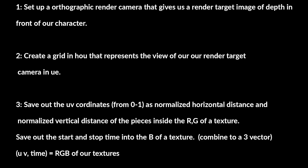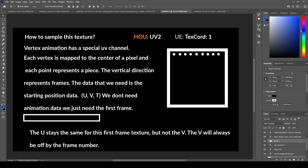And then save out the start and stop time into the B of a texture, combined into a three-vector — UV and time — the RGB of our texture.